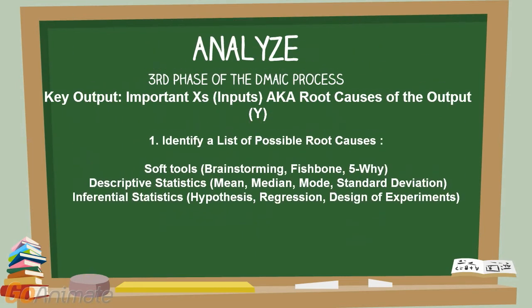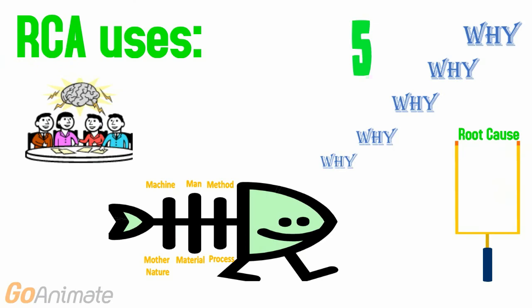Step 1: Identify a list of possible root causes. In the Analyze Phase, soft tools, descriptive, and inferential statistics are used to identify and filter the data for important Xs. Lean Six Sigma uses soft skills such as brainstorming, fishbone analysis, and 5Y for initial identification of root causes.